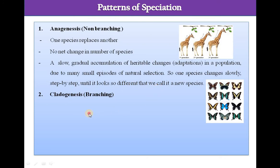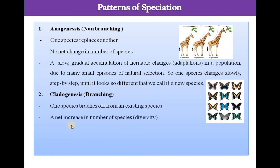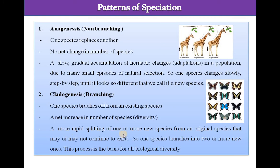Cladogenesis is a branching kind of speciation where one species branches off from an existing species, resulting in a net increase in number of species. It involves a more rapid splitting of one or more new species from an original species that may or may not continue to exist — one species branches into two or more new ones. This process is the basis for biological diversity.